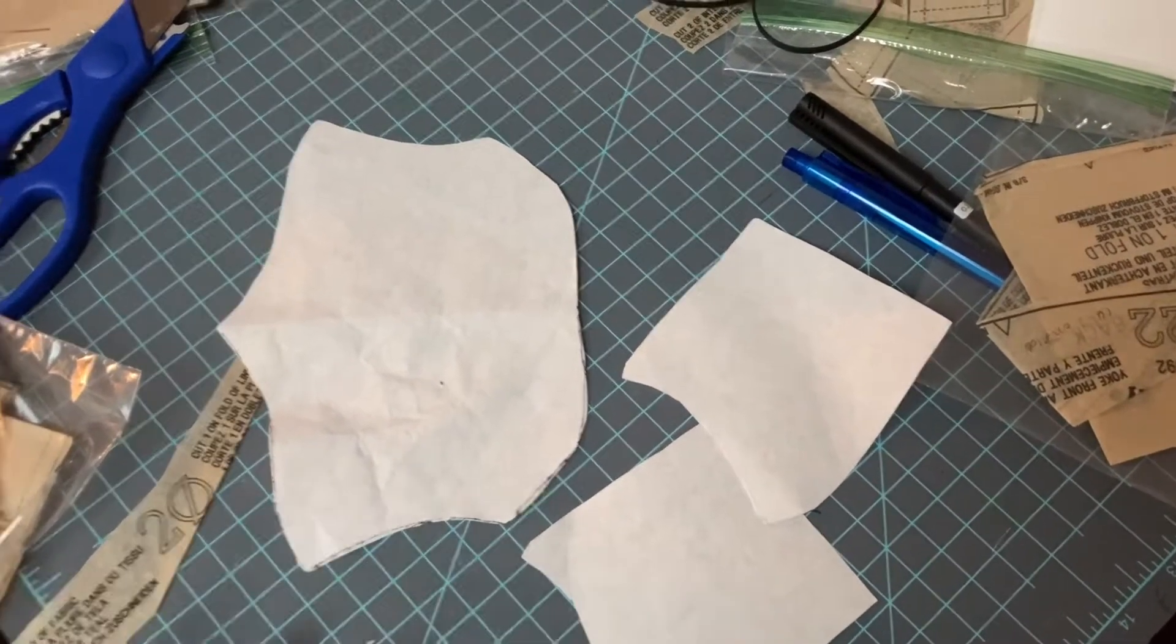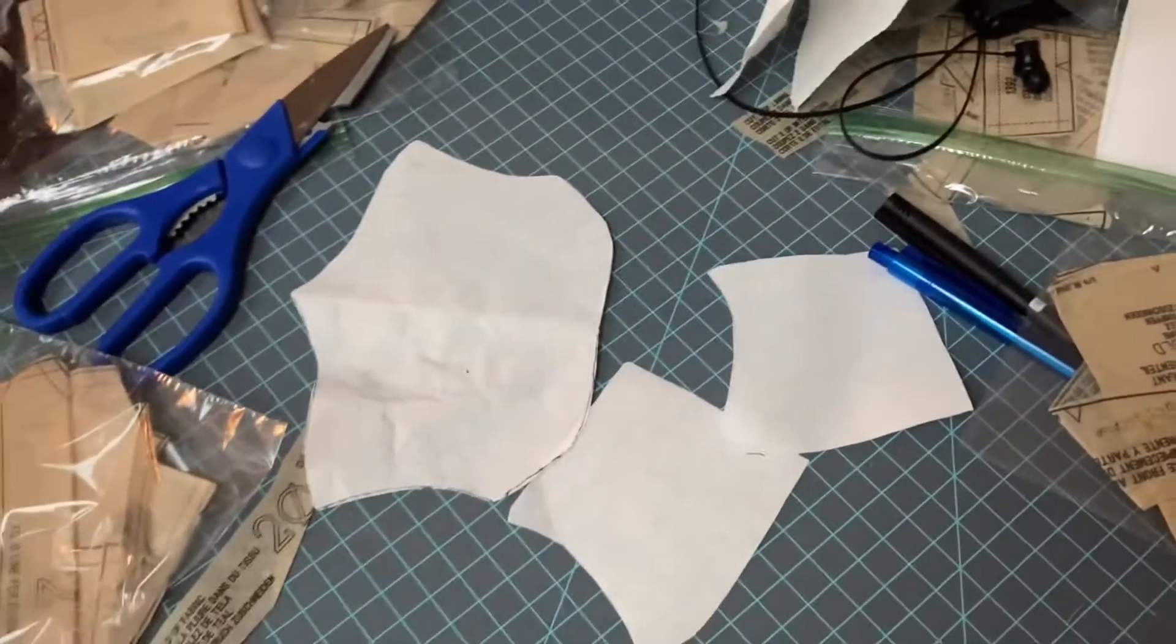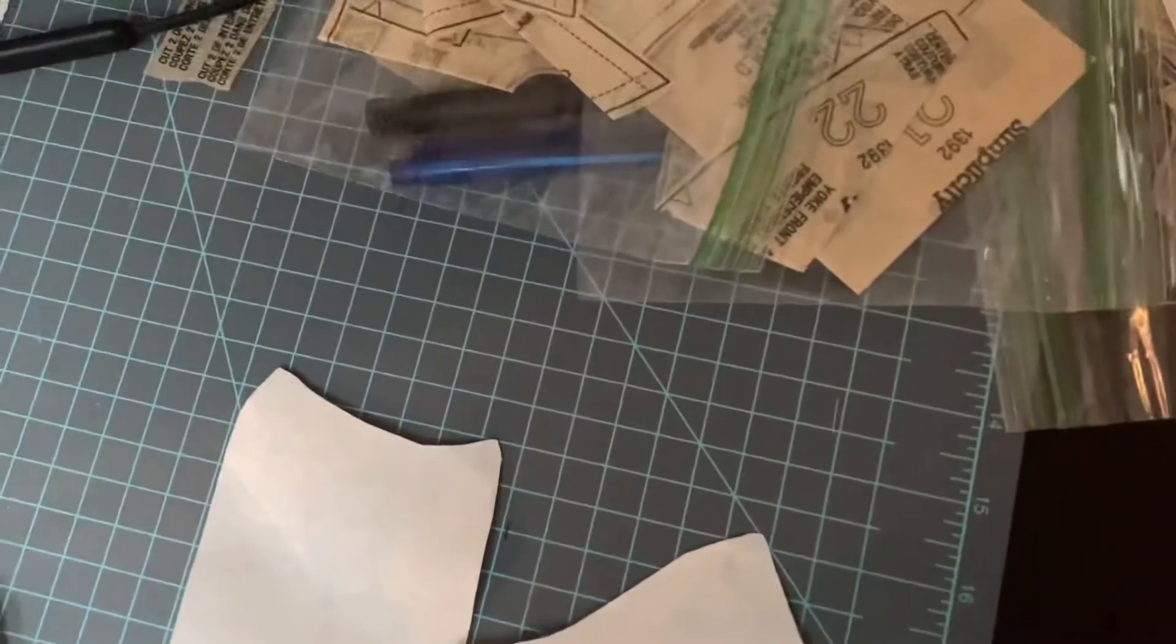Just to give the corset some stability, it's the kind of corset that's more of a fashion corset than anything else. So I cut those out of some paper interfacing I have for my embroidery stuff. All that brown paper is patterns.